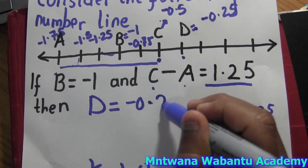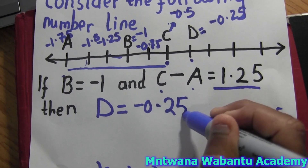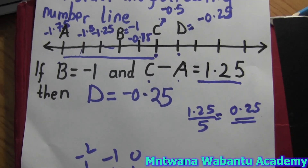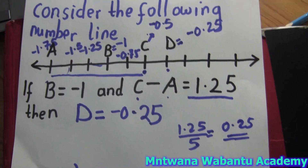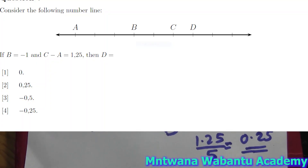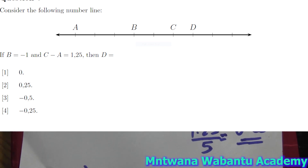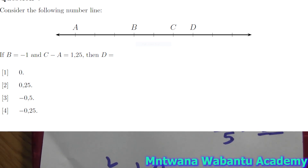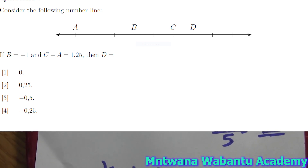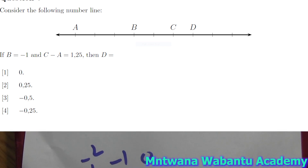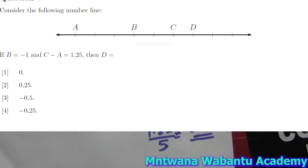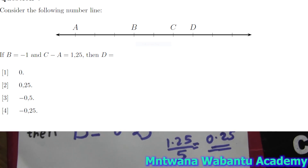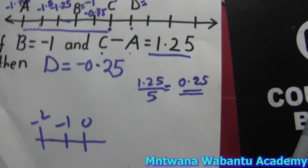So d equals negative 0.25. Looking at the options, option number four: the value of d equals negative 0.25.